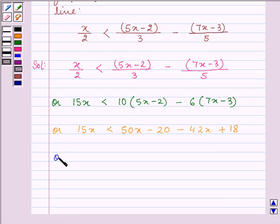After simplification we have 15x is less than 8x minus 2. Now subtracting 8x from both the sides we have 15x minus 8x is less than 8x minus 2 minus 8x.